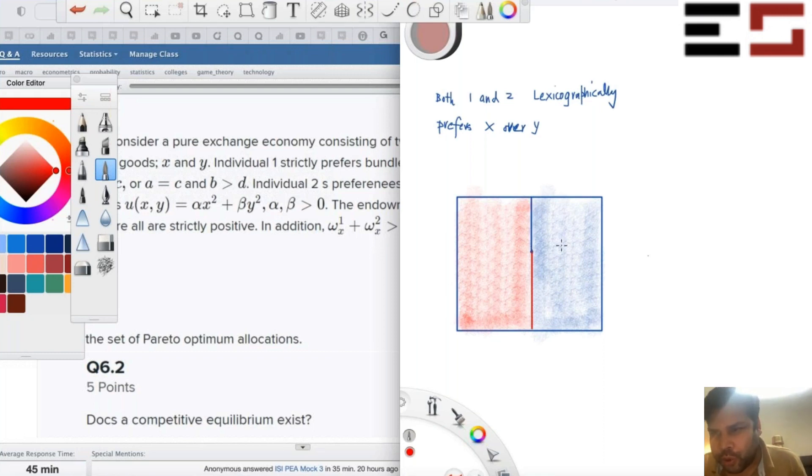We have just shown it for this point, but this is the story for everything. Every point, same story. So in this case, the set of Pareto-efficient allocations is the entire edge of the box. Is that okay? Yes, sir. Thank you.